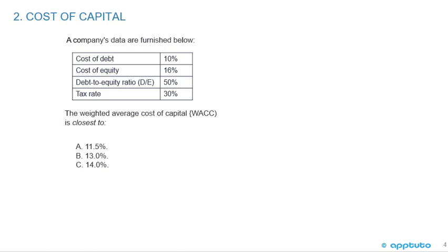Let's do a quick practice question. A company's data: cost of debt 10%, cost of equity 16%, debt-to-equity ratio 50%, tax rate 30%. The weighted average cost of capital is closest to: A) 11.5%, B) 13%, or C) 14%?